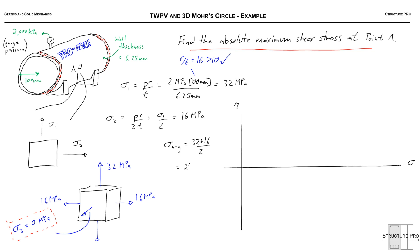The radius of the circle is given by the difference divided by 2, so 32 minus 16 over 2, and that is 8 MPa. Now we note that the sigma average and R that we've just found is just for one of the Mohr circles out of three.